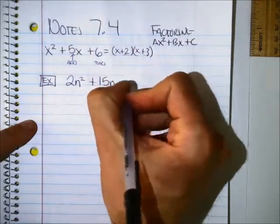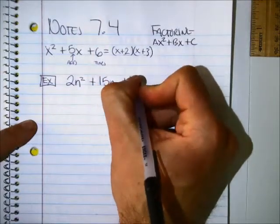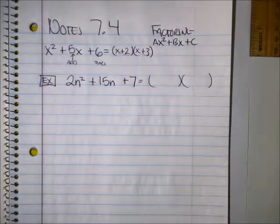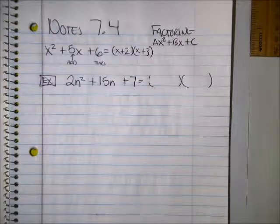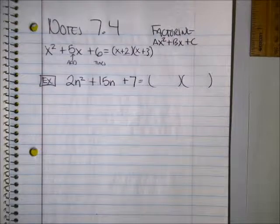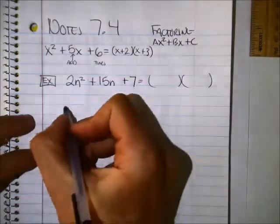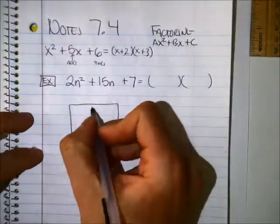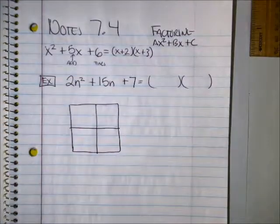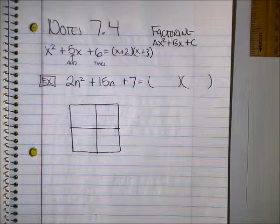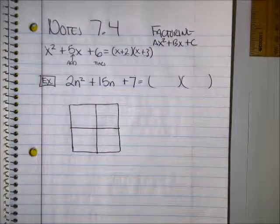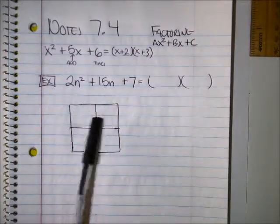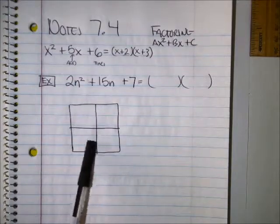So I'm going to show you what changes. So let's say if I give you 2n squared plus 15n plus 7. I'm going to factor that into two terms that are multiplying each other. I'm going to use the box here, because this one's a little bit trickier to get it down. All right, so for these three terms, which one of these boxes can I fill in right away?